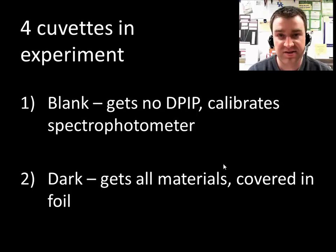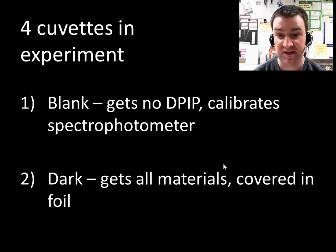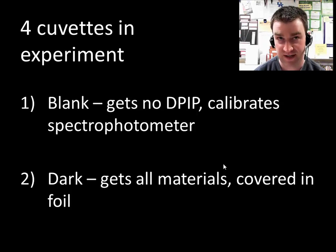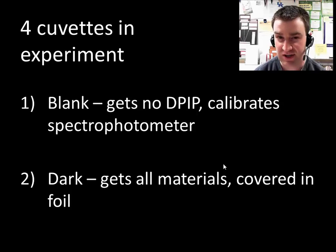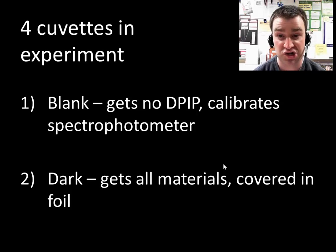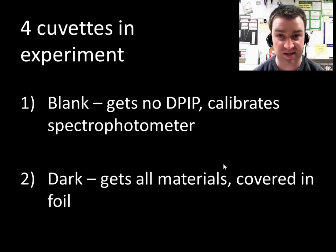We have four cuvettes to work with in this initial experiment. The first is the blank, which you'll also need for your student-designed experiment. The blank gets phosphate buffer solution, water, and spinach chloroplasts, but no DPIP — we replace the DPIP with water. We want the blank to be perfectly clear except for the slight green of the spinach chloroplast drops. The blank is used to show the spectrophotometer what 100% transmittance looks like in this experiment.